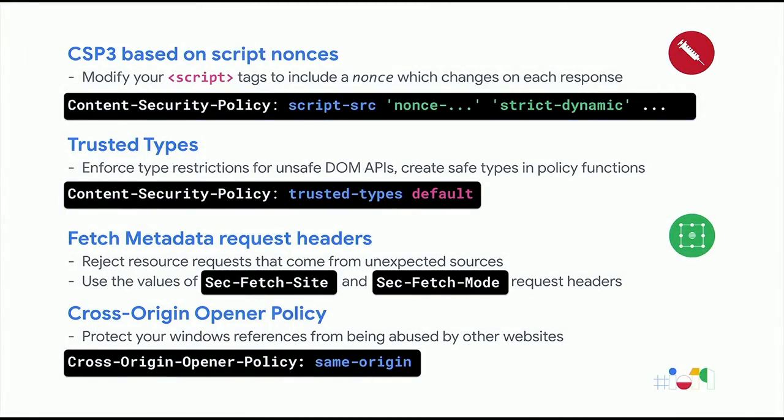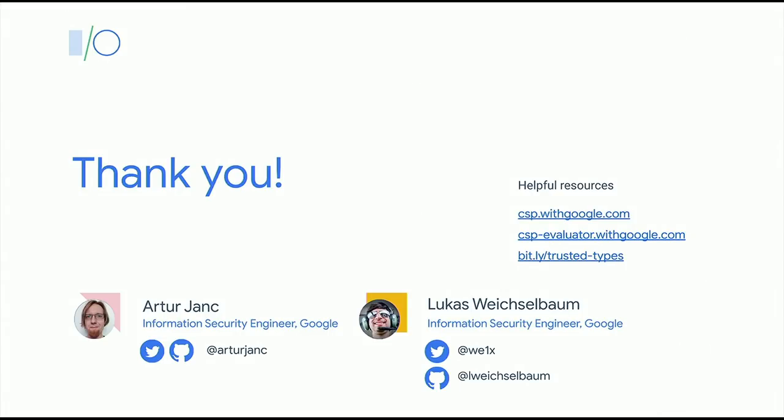This is the final slide. We have very powerful security mechanisms arriving in the web platform this year — for the first time, the web platform has security capabilities that let you protect against the majority of vulnerabilities we've seen on the web before. There are protections against injections — CSP and trusted types — and isolation mechanisms such as fetch metadata request headers and the cross-origin-opener policy. If you adopt them on your sites, your users will be much safer against most vulnerabilities affecting web applications. Thank you very much — Lukas and I will stick around after the talk if you have any questions.